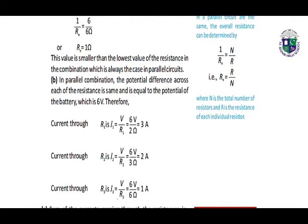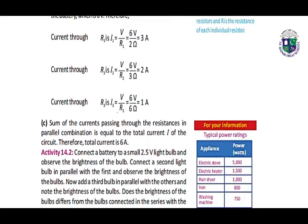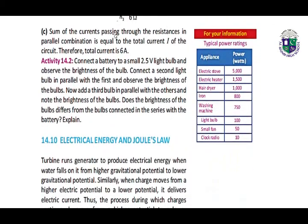In parallel combination, the potential difference across each of the resistances is the same and is equal to the potential of the battery, which is 6 volts. Current through each is then calculated using Ohm's law for R1, R2, and R3. The sum of the currents passing through the resistances in a parallel combination is equal to the total current I of the circuit. Therefore, total current is 6 A.